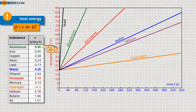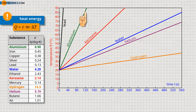Aluminum thus requires much less heat to achieve the same temperature change. Conversely, this means that the temperature consequently rises more quickly for a certain amount of heat. Therefore, the lower the specific heat capacities, the steeper the straight lines in the diagram.